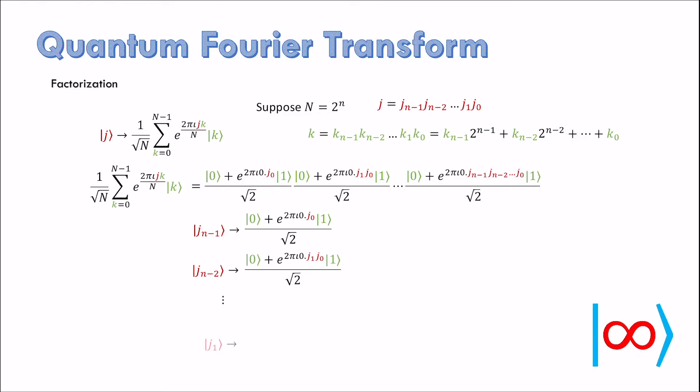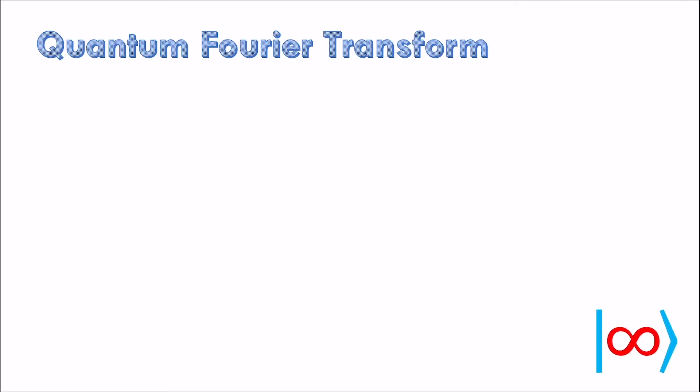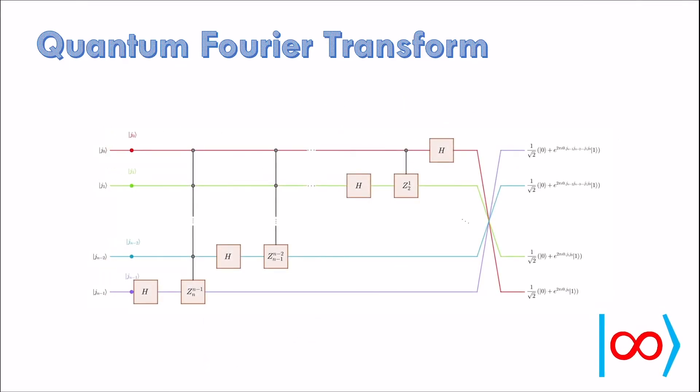Notice we almost know how to get these target states using controlled rotations. But we transform the states in the following manner. Then all we'll be left to do is to rewire the qubits at the right location using swap gates. Here is the final circuit that implements quantum Fourier transform.